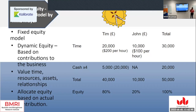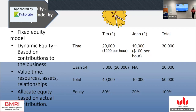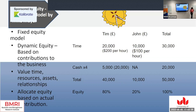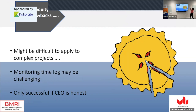Let's say Tim also contributes £5,000 in cash. In this model, we multiply cash contributions by four, so that £5,000 becomes £20,000 in value. Adding his time and cash together, Tim has contributed £40,000 worth, while John has contributed only £10,000 in time and no cash. So we allocate Tim 80% equity and John 20%. This is a rough example of how dynamic equity can allocate equity early on when you can't pay staff.